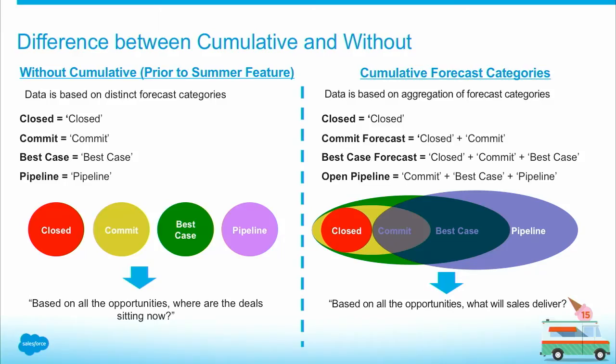First I want to talk about the differences between cumulative and without. So you can see on the left side here — this is prior to the summer feature. If you don't turn on this preference, this is what you see within the forecast application. When we say close, the data is all based on your distinct forecast categories. Close means the deal is only in closed. Commit means only deals in commit. Best case means only deals in best case. Pipeline means only deals in pipeline.